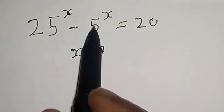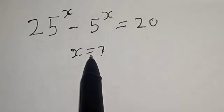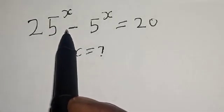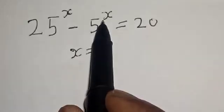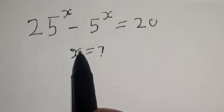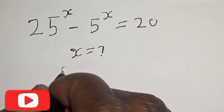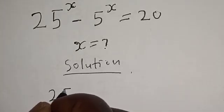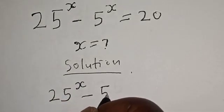25 raised to power x minus 5 raised to power x is equal to 20. What is the value of x? Welcome to my class. In this class, we want to find the value of x from this equation. Please don't forget to like, comment, share and subscribe. Solution: the original equation is 25 raised to power x minus 5 raised to power x is equal to 20.